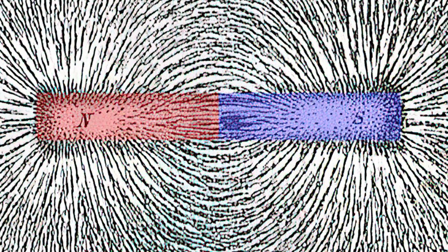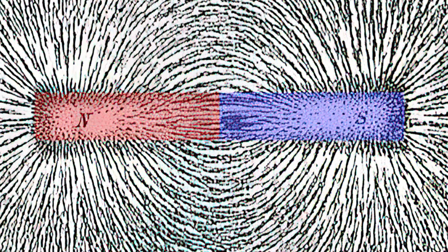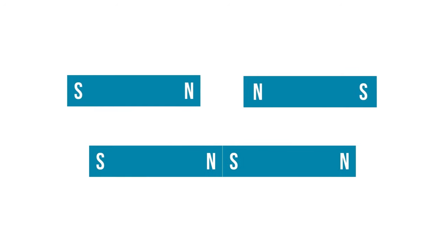Anything with a magnetic field has polarity, a north pole and a south pole, with flux lines connecting them. Like poles repel each other, while unlike poles attract each other.